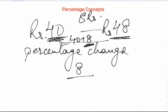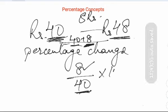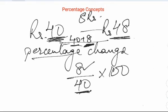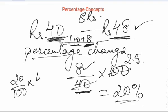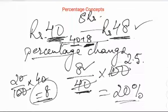So the change of 8 has come upon 40 rupees. 8 is the change, and it has come upon 40 into 100, because we are going to calculate the percentage. So in this case, the percentage change is 20%. Or we can see from this also, 20% of 40 is 8.